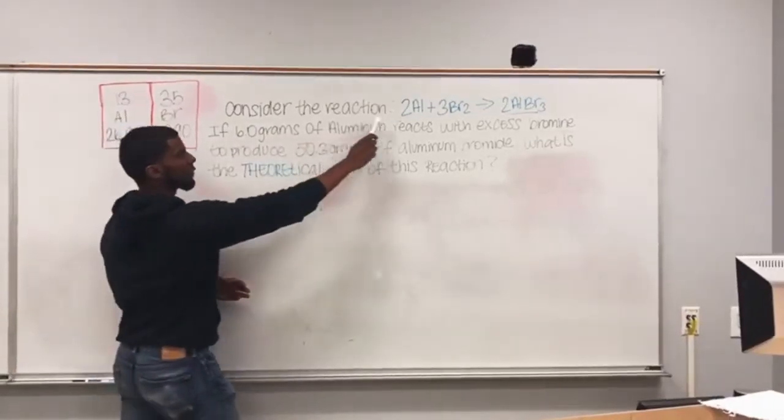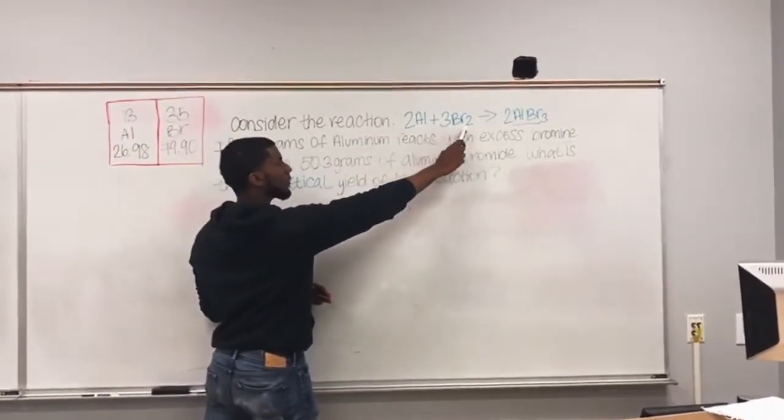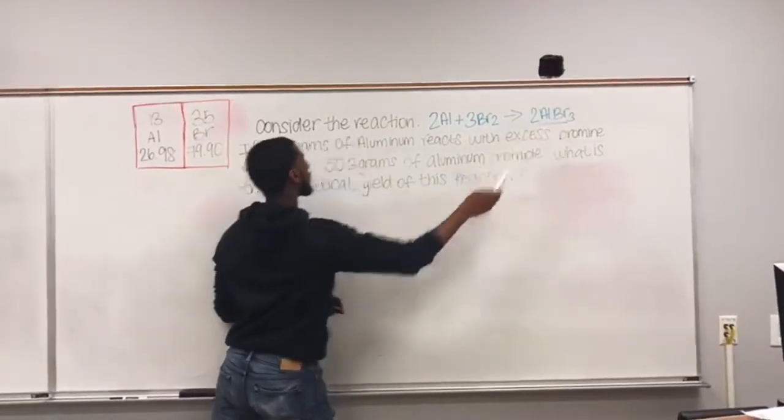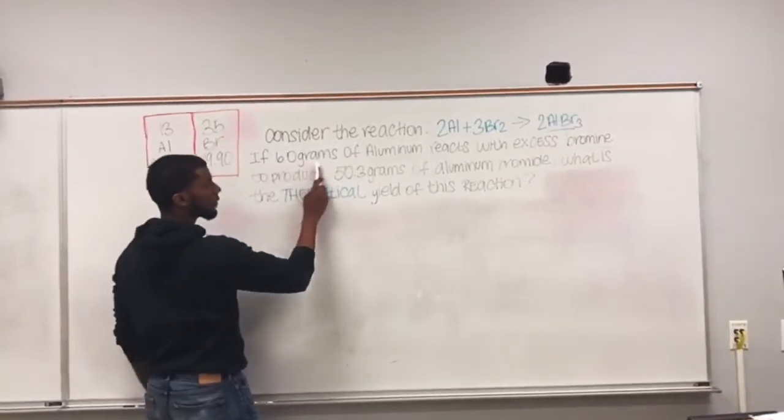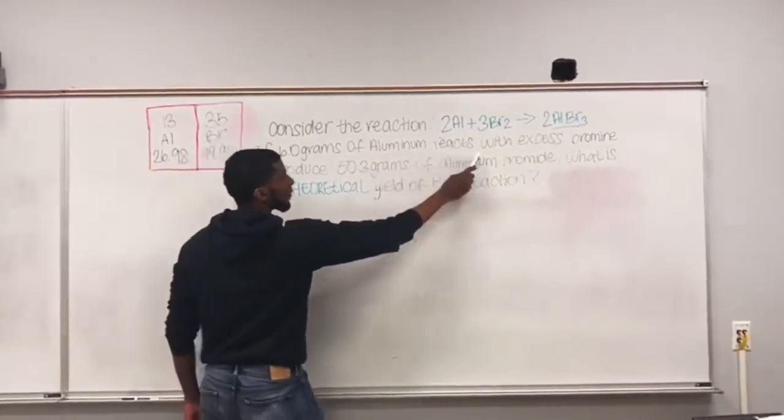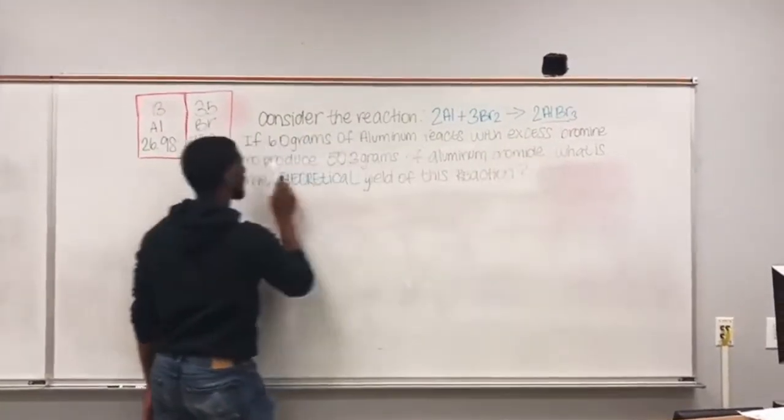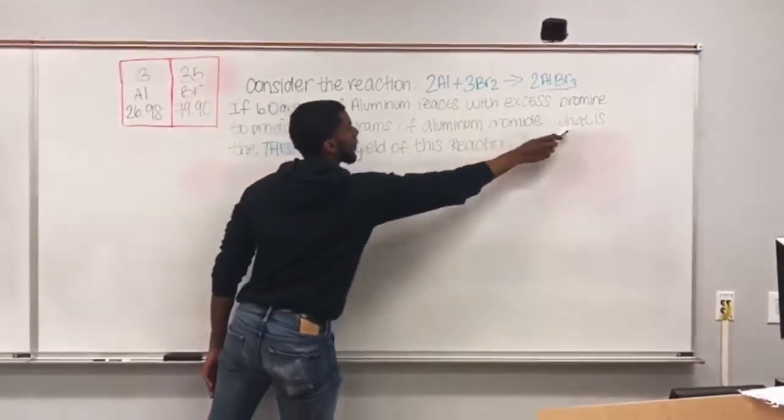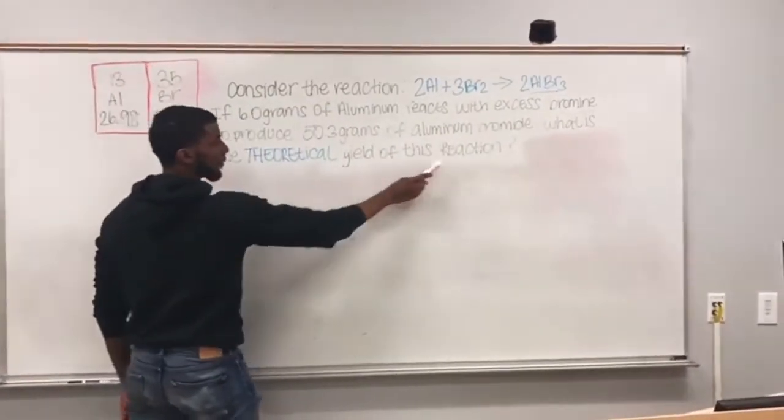Consider the reaction 2Al + 3Br2 → 2AlBr3. If 6.0 grams of aluminum reacts with excess bromine to produce 50.3 grams of aluminum bromide, what is the theoretical yield of this reaction?